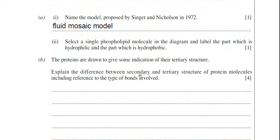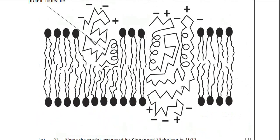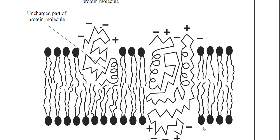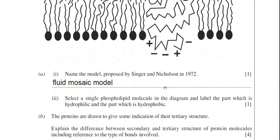Part B looks at protein structure. The examiner says the proteins are drawn to give some indication of their tertiary structure. If I circle that region, that is an alpha helix, and this region here would be a beta pleated sheet. The examiner has shown that those secondary structures — an alpha helix and a beta pleated sheet — have become folded again and compacted to form the overall tertiary structure.